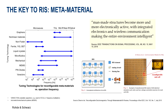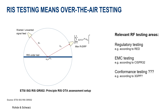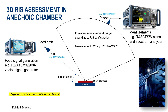Another quite interesting metamaterial is liquid crystal-based. When it comes to RIS testing, we need to talk about over-the-air testing. In a controlled environment, for instance in an anechoic chamber, we need to illuminate the RIS under test and subsequently measure characteristics of the reflected wave. Relevant testing needs are defined by regulatory bodies and possibly future conformance test needs according to 3GPP. We can regard the RIS as an intelligent antenna; therefore, legacy antenna measurement setups can be used to measure the reflected signal in a three-dimensional manner with the impinging signal provided by a dedicated feed antenna.